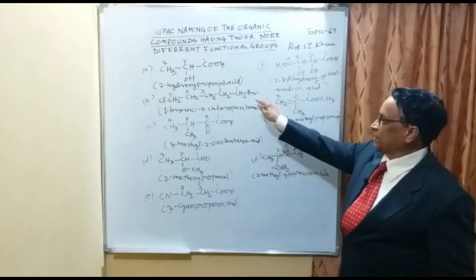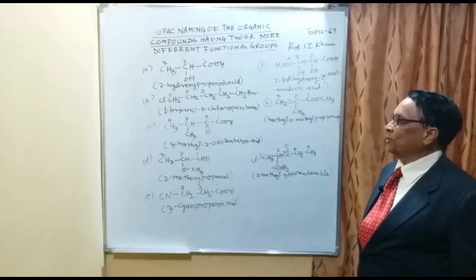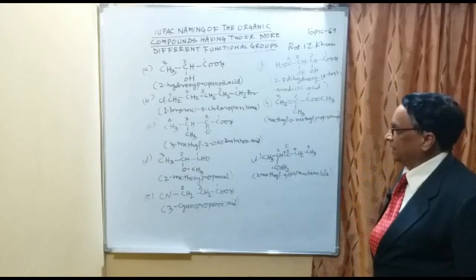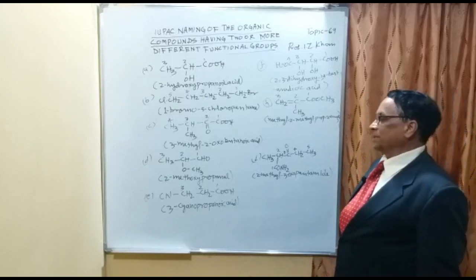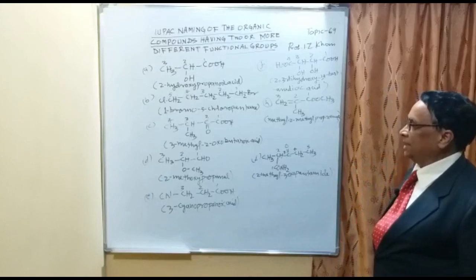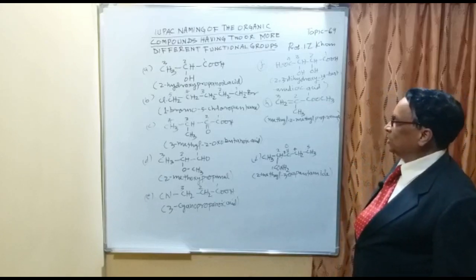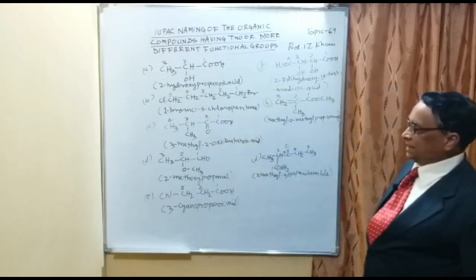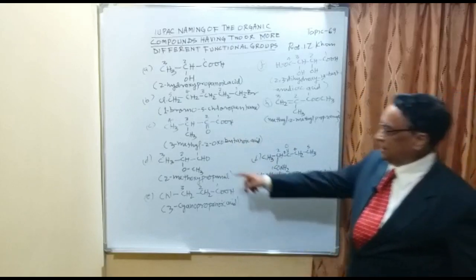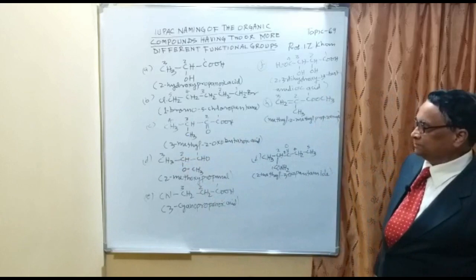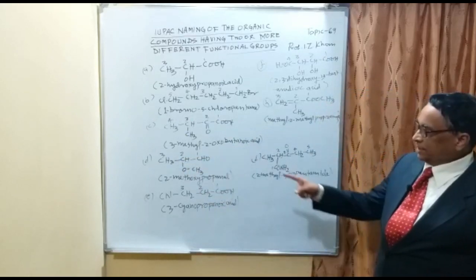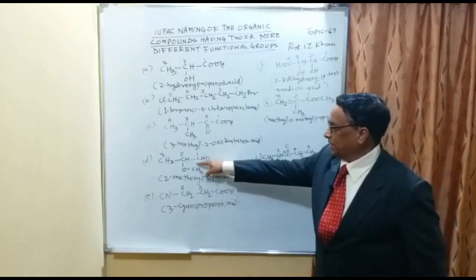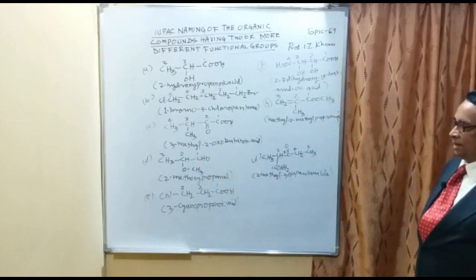Since the lowest number is assigned to bromine, the name is 1-bromo-5-chloropentane. In example C, at carbon 2 there is a keto group and at carbon 3 there is a methyl group, giving 3-methyl-2-oxobutanoic acid — 'oxo' for the keto group. Example D has a methoxy group at carbon 2, and the aldehyde carbon is part of the chain, giving 2-methoxypropanol.